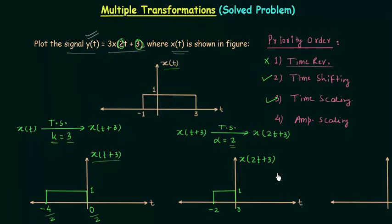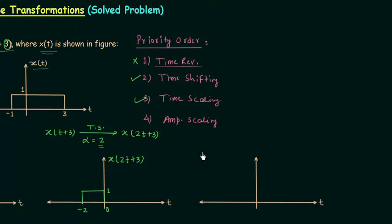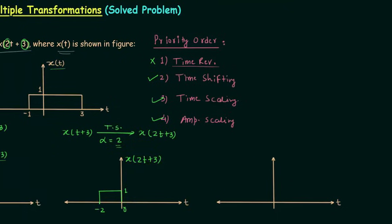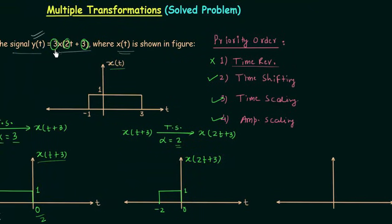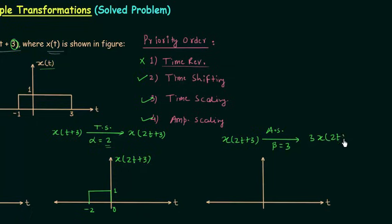This is the plot of signal x(2t+3). Now we will move to the last operation to find the signal y(t). The last operation is amplitude scaling, and if you see the expression of y(t) you will find we are multiplying 3 to x(2t+3). So x(2t+3) is the original signal in this last case and we will perform amplitude scaling in which beta is equal to 3. After this we will have 3x(2t+3). In amplitude scaling there is change in the amplitude but time remains the same, so we have minus 2 to 0, and in place of 1 we will have 3, because 1 multiplied by 3 is equal to 3.